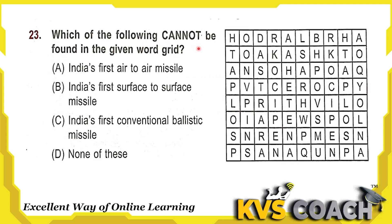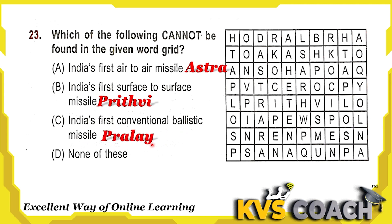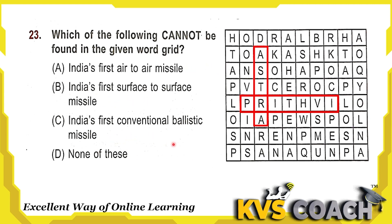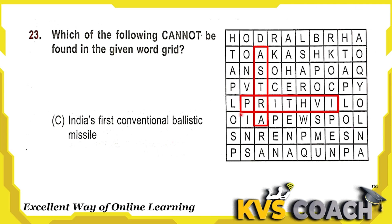Next question: which of the following cannot be found in the given grid? Option A is India's first air-to-air missile — the answer is Astra. Option B is India's first surface-to-surface missile — this is Prithvi. Option C is India's first conventional ballistic missile — this is Prahaar. We can find Astra and Prithvi in the grid, but Prahaar cannot be found. So the right answer is option C.